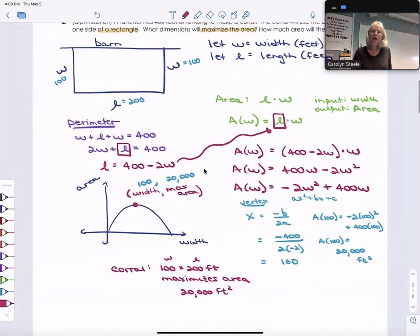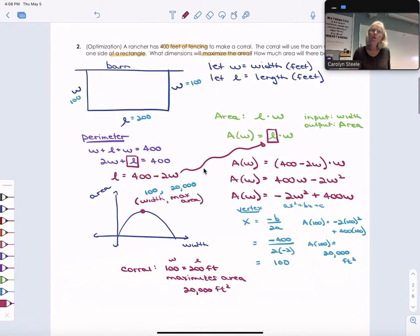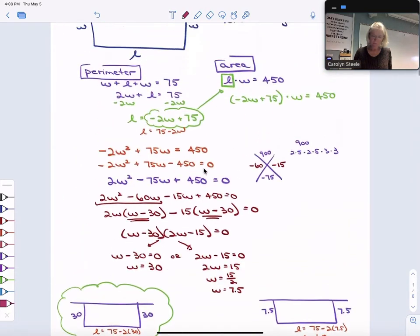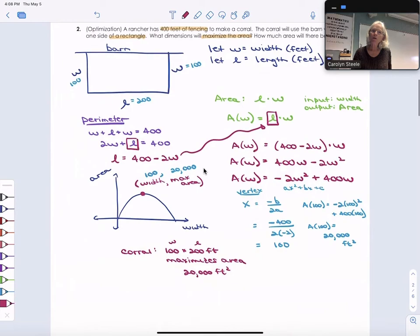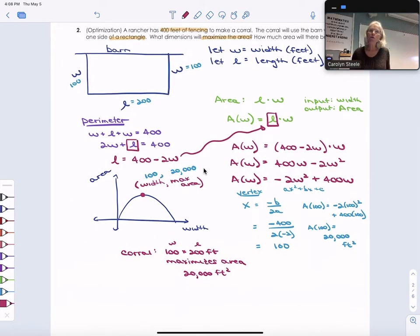And that maximum area is going to be 20,000 feet squared. So take a minute and kind of consider how were these, the first problem that we did in the other video, and this one. How are they similar? How are they different? How do you know which one you're being asked to solve?